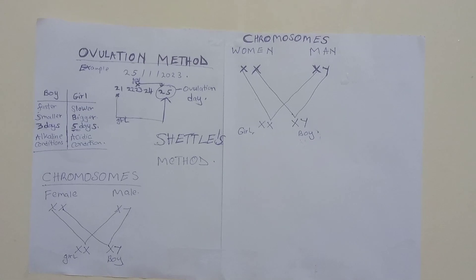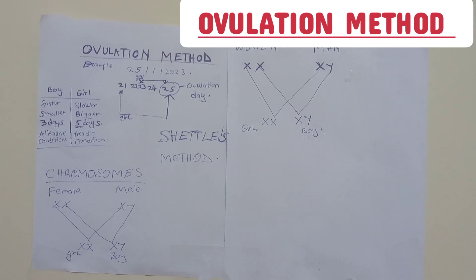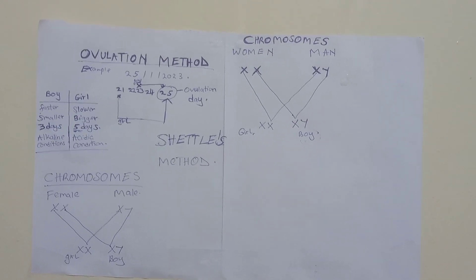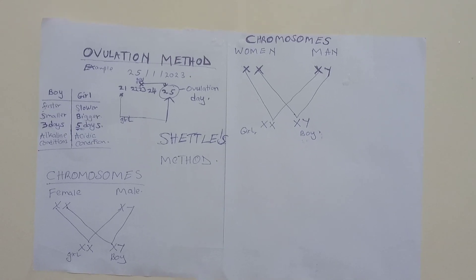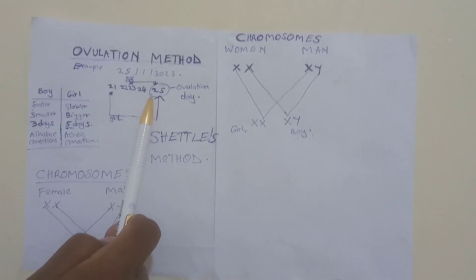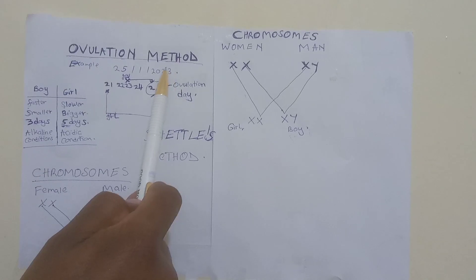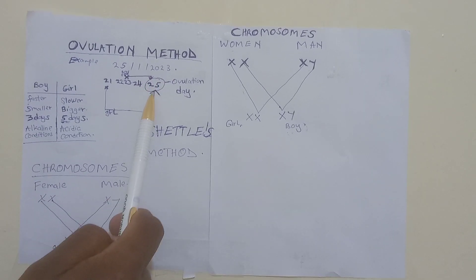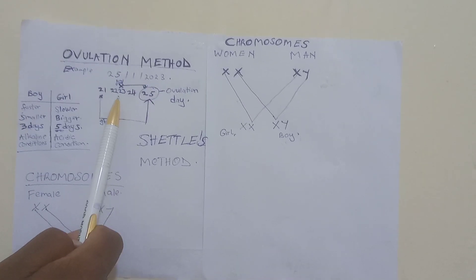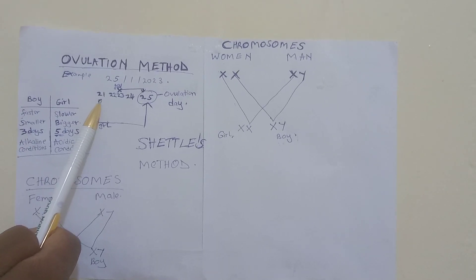Dr. Shettles came up with a method known as the ovulation method. You must be sure of your ovulation day, which applies when you have a regular menstrual cycle. For example, if you have a 28-day cycle and your ovulation day is on the 25th of January 2023, counting five days behind the ovulation day gives you the 24th, 23rd, 22nd, and 21st. If a man deposits the sperm on the 21st...